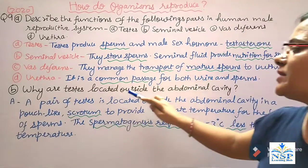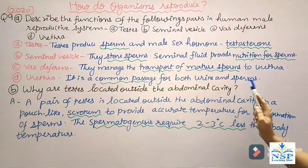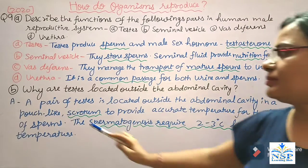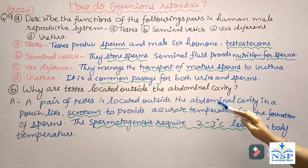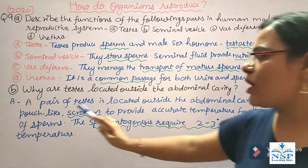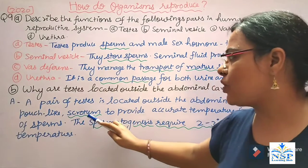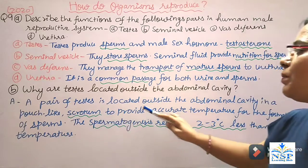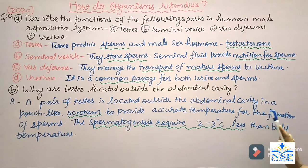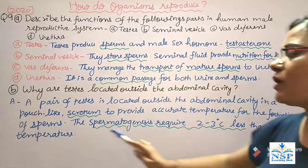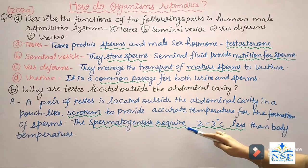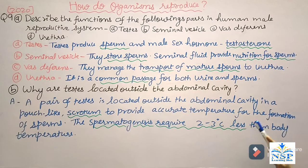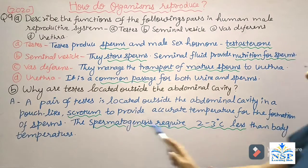Why are testes located outside the abdominal cavity? A pair of testes is located outside the abdominal cavity in a pouch-like scrotum to provide the accurate temperature required for the formation of sperms. Spermatogenesis requires a temperature 2 to 3 degrees centigrade lower than body temperature.